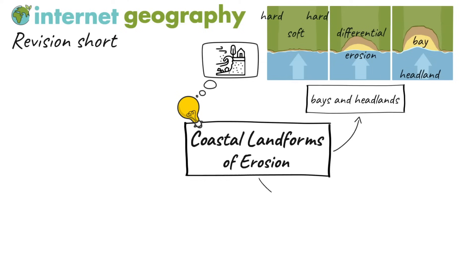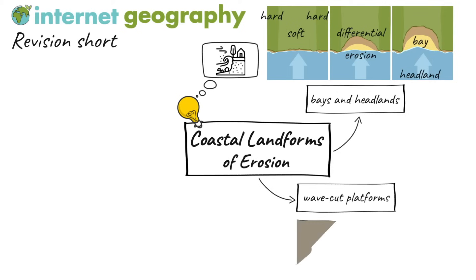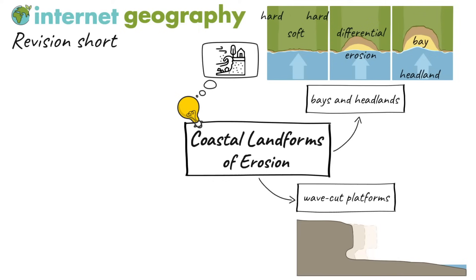Cliffs and wave-cut platforms are landforms of erosion commonly found along the coast. Processes of coastal erosion and weathering are responsible for shaping cliffs. Less resistant soft rock erodes quickly, forming gentle and sloping cliffs. More resistant hard rock forms steep cliffs. Where cliffs are made from more resistant rock, wave-cut platforms are often formed.